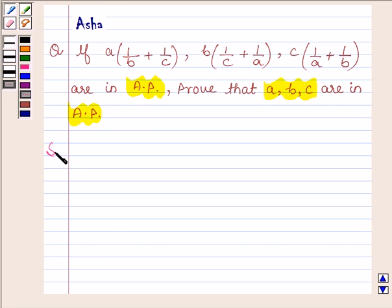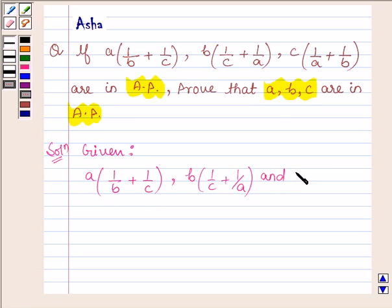So let us now begin with the solution. We are given that a(1/b + 1/c), b(1/c + 1/a), and c(1/a + 1/b) are in AP.